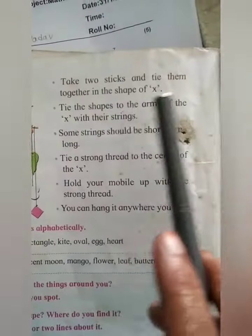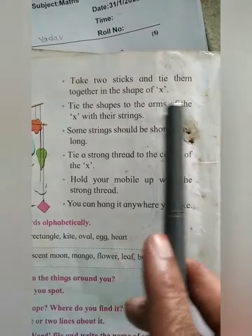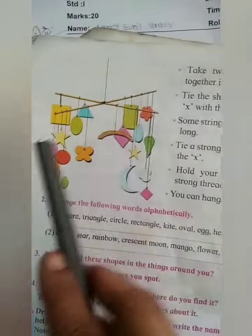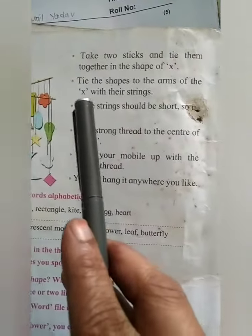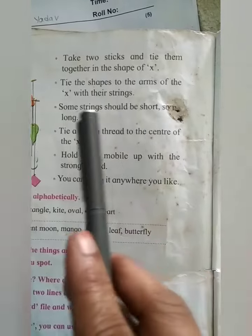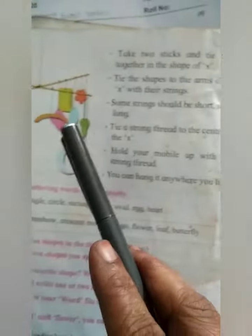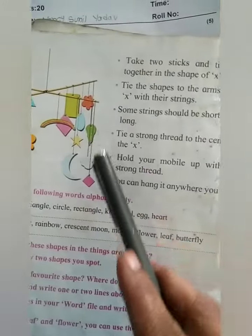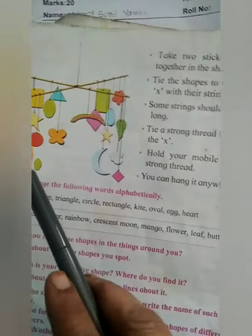Take two sticks — you can tie them together in the shape of X. Then tie the shapes to the arms of the X with their strings. You have to make a project like this.